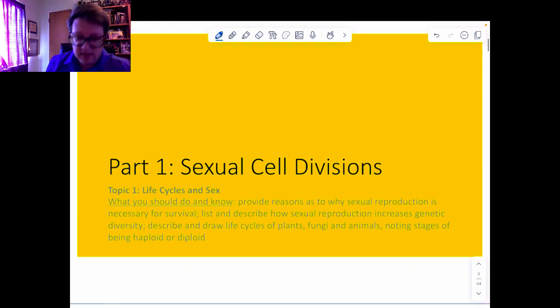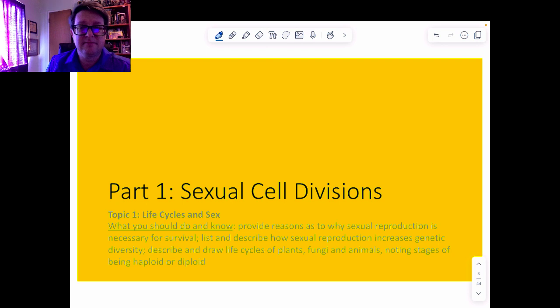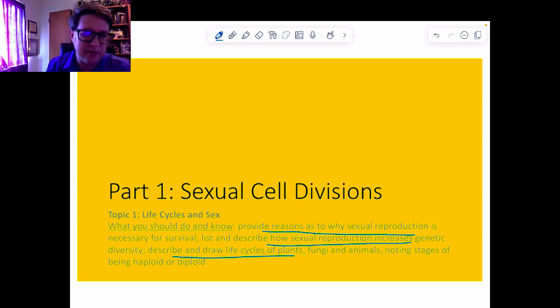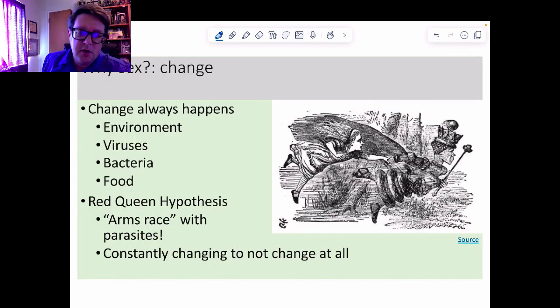Part number one and topic number one is going to be sexual life cycles. You should be able to provide reasons as to why sexual reproduction is necessary, describe how sexual reproduction increases genetic diversity, describe and draw life cycles for plants, fungi, and animals, and say when they're haploid or diploid.